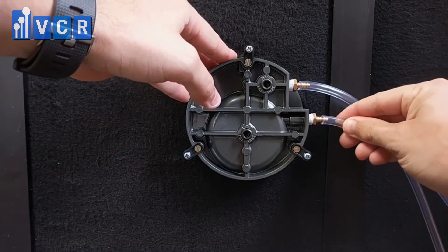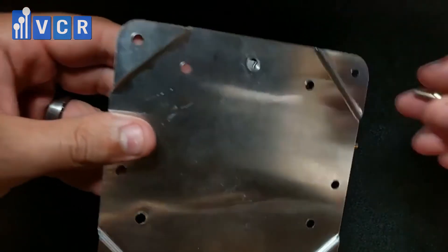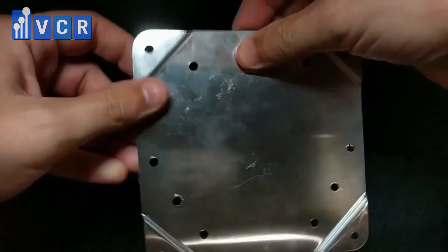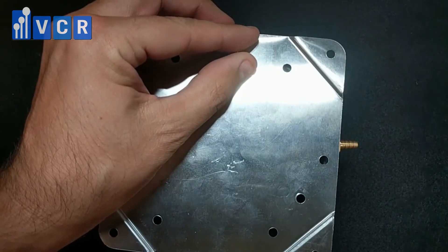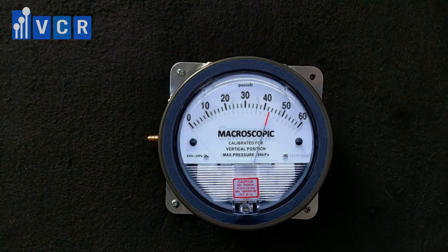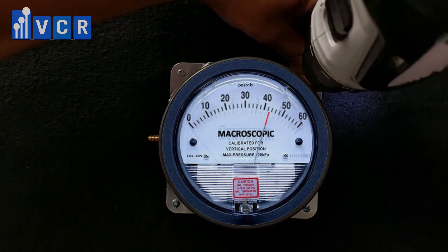A second common option for installation is surface mounting by using a surface mounting plate. For this application, the brass fittings will need to be installed in the ports on the side of the gauge and the plugs will need to be installed on the back. Once the fittings and plugs are installed, use the small screws provided to attach the mounting plate to the back of the gauge. With the gauge secured to the plate, use the additional screws to mount the bracket to the preferred surface.